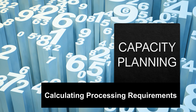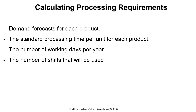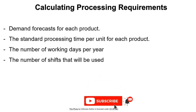To calculate the capacity requirements to process some products, the following pieces of information have to be known: reasonably accurate demand forecasts for each product, the standard processing time per unit for each product, the number of working days per year, and the number of shifts that will be used.